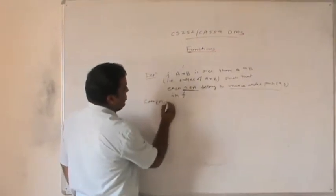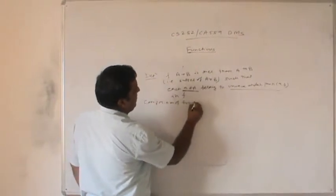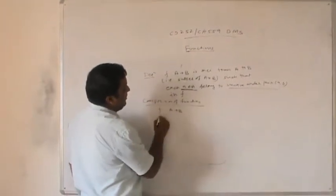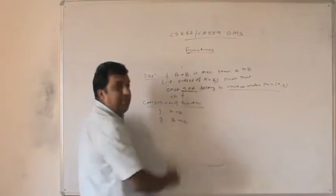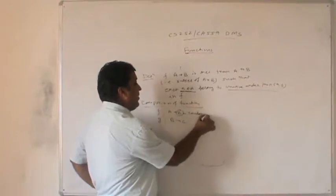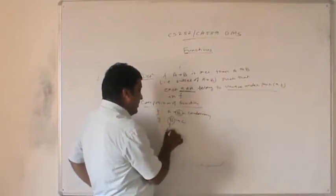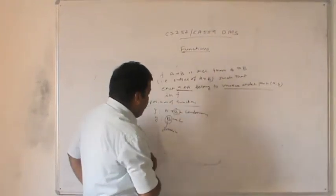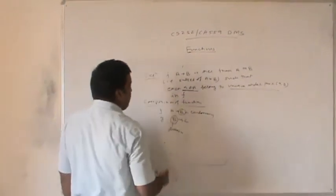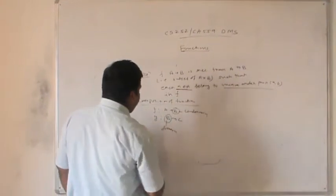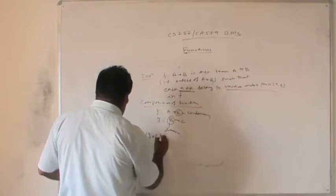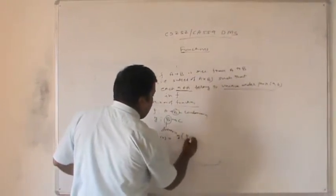What is the composition of a function? Composition is when we take f: A → B and another function g: B → C. Here, B is the co-domain of f and the domain of g — both are the same. At that time, we can move from A to C using the composition function, represented as g∘f(a) = g(f(a)).